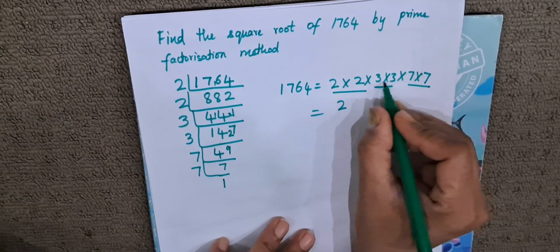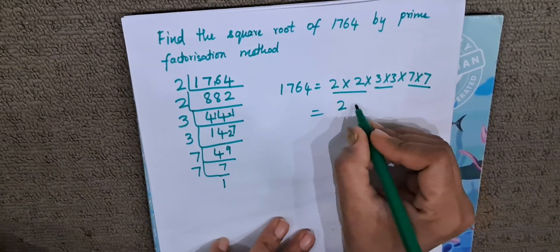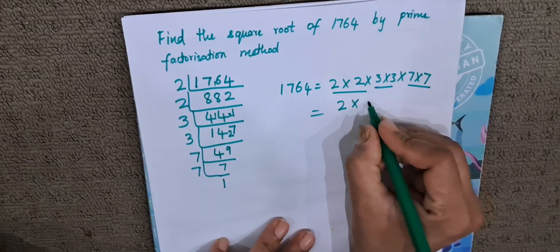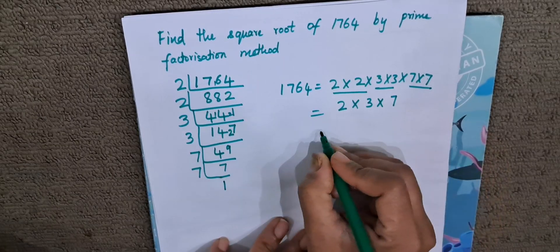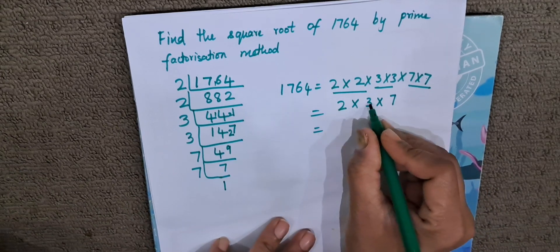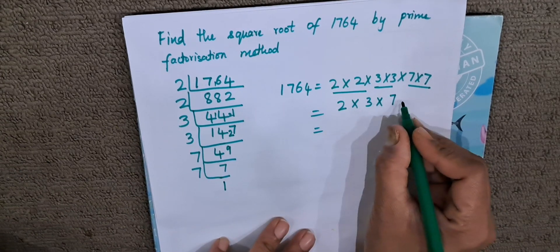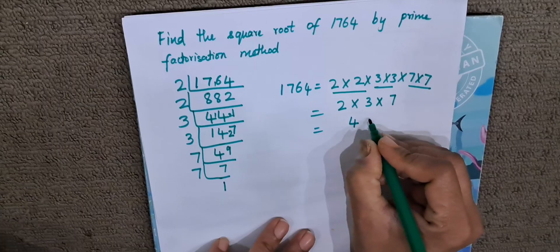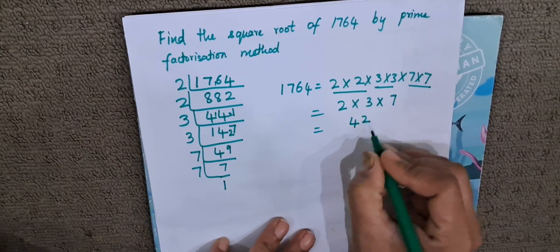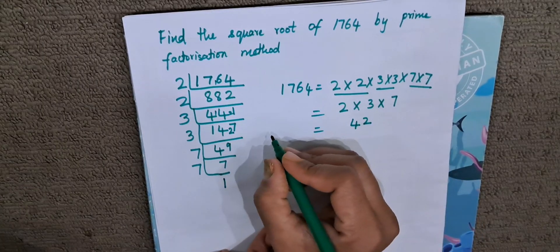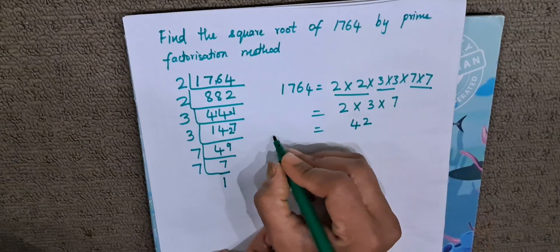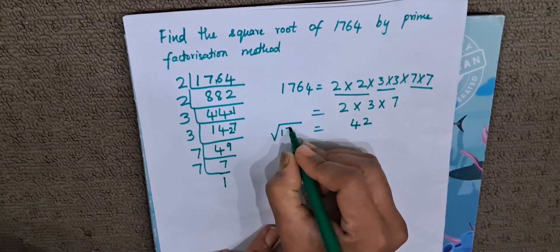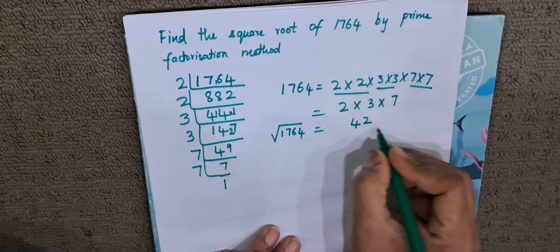3 and 3, it is a pair of 2 same numbers. 3 and 3 we will take 1 number. 7 and 7 we will take 1. So 2 3's are 6, 6 7's are 42. 42 is the square root of 1764.